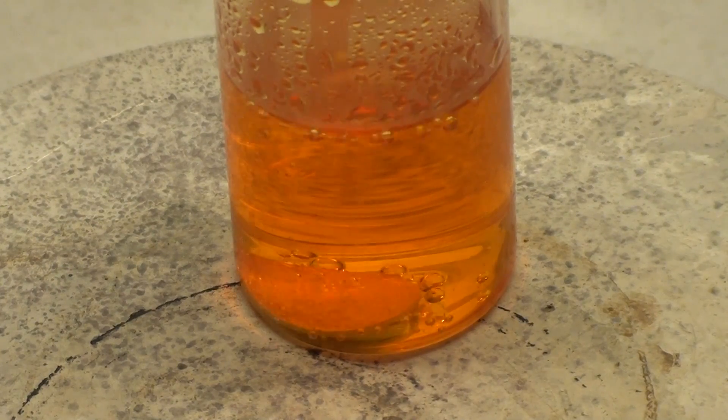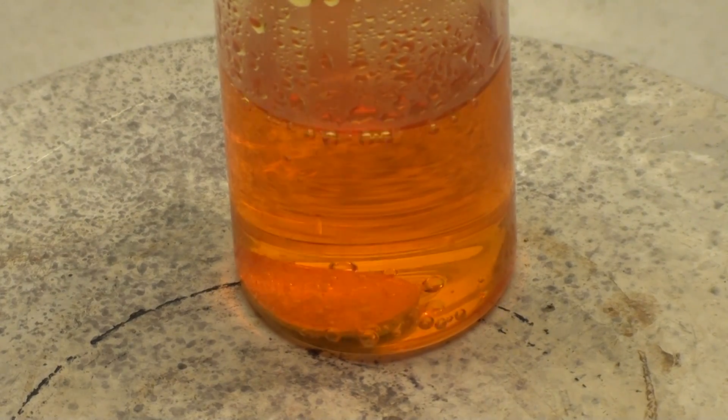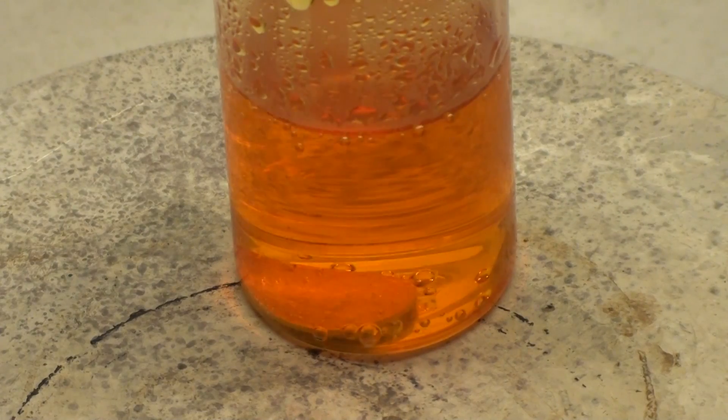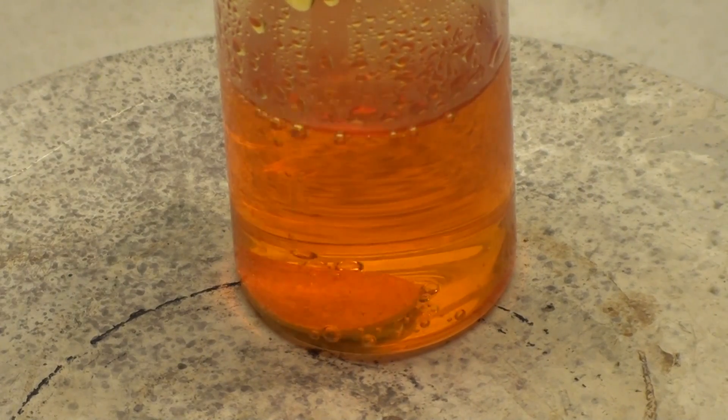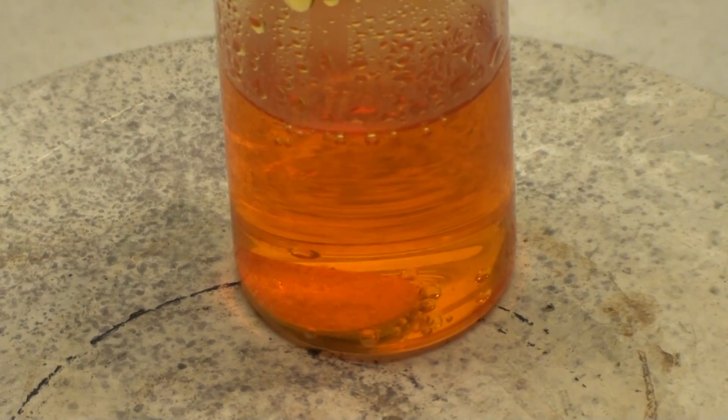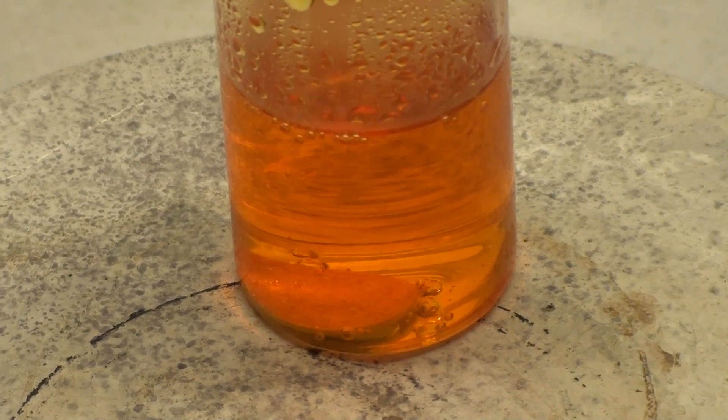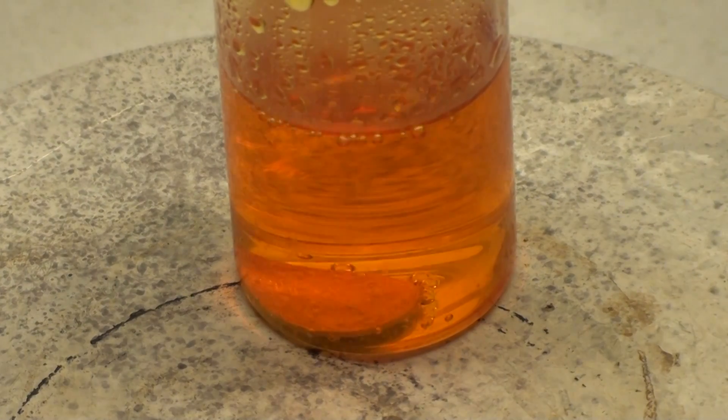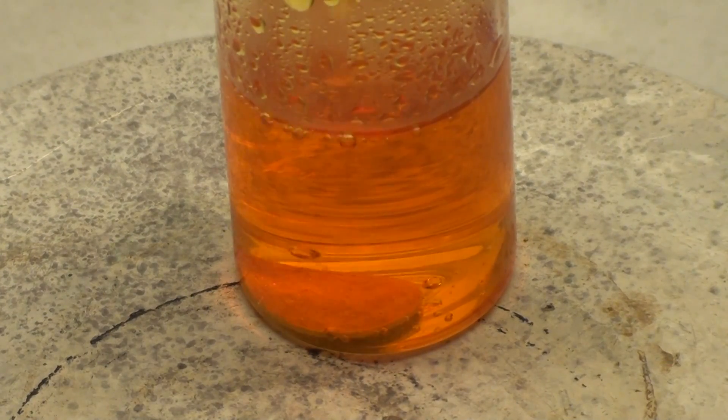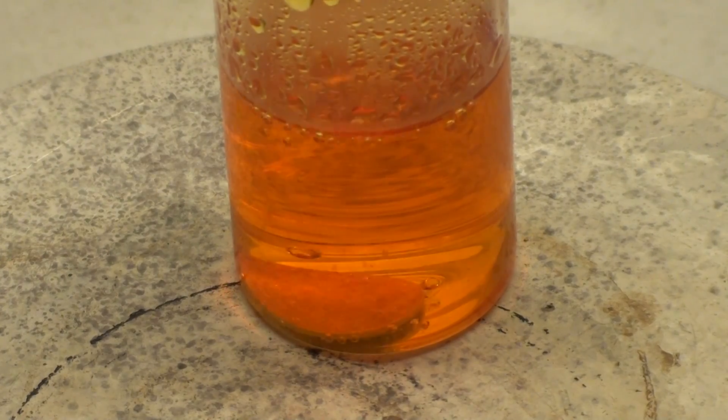Other oxidants also work but nitric acid is the easiest to work with. The bubbles you're seeing are nitrogen dioxide gas along with some nitrosyl chloride, chlorine and nitrogen monoxide. This mixture of hydrochloric and nitric acid is also known by the name of aqua regia.